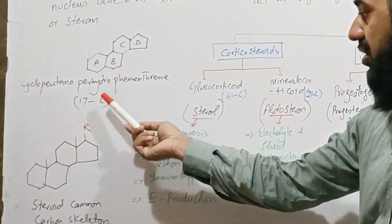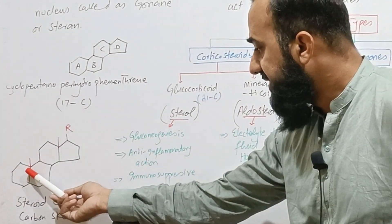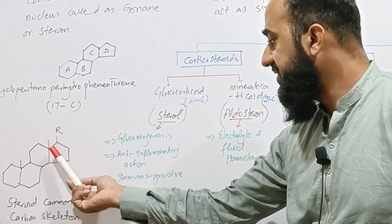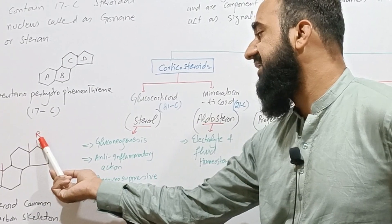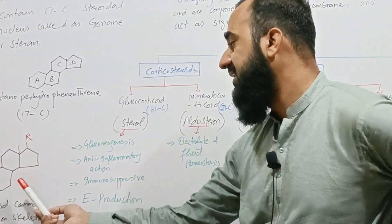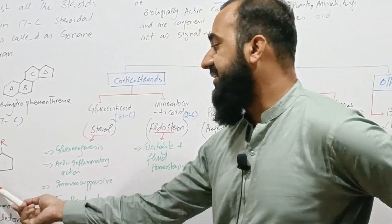If we see the common substitution present, one methyl is present at this position, other at this position, and at this position different groups or alkyl chains are present in most of the steroids. So this is called common steroidal carbon skeleton.